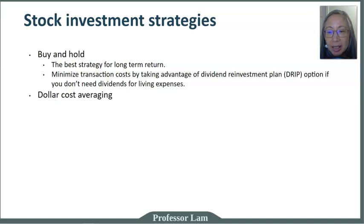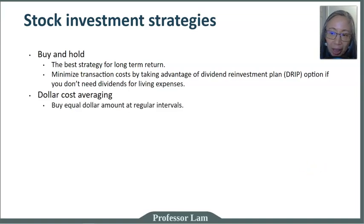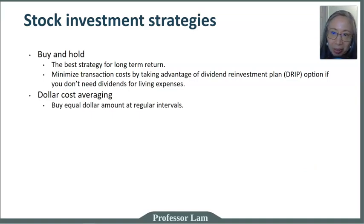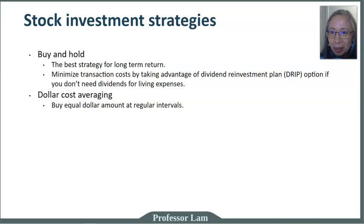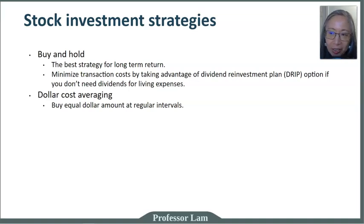Another strategy is dollar cost averaging, which is also a good savings strategy. You buy an equal dollar amount each month at regular intervals. The idea is that you're not trying to time the market — not trying to buy low and sell high, because as we saw in the graph earlier, it's very hard to tell when you're at the top or bottom of the market. Buy and hold and dollar cost averaging are both common investment strategies.